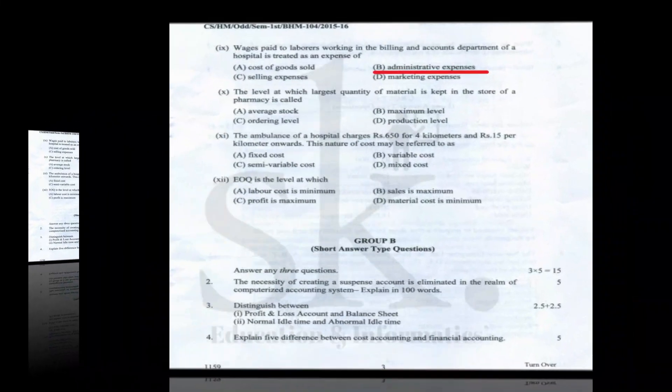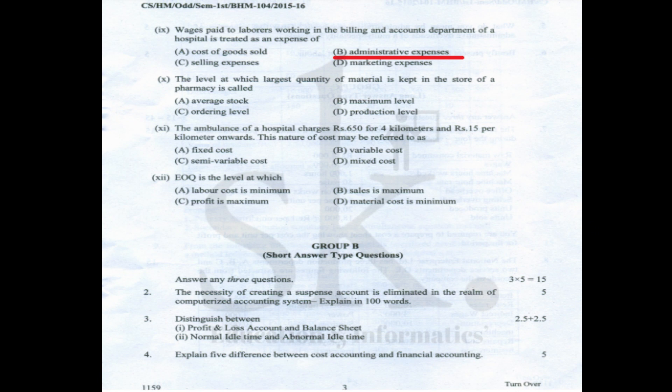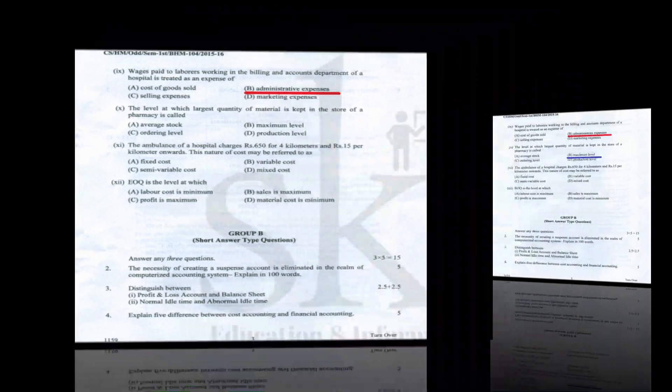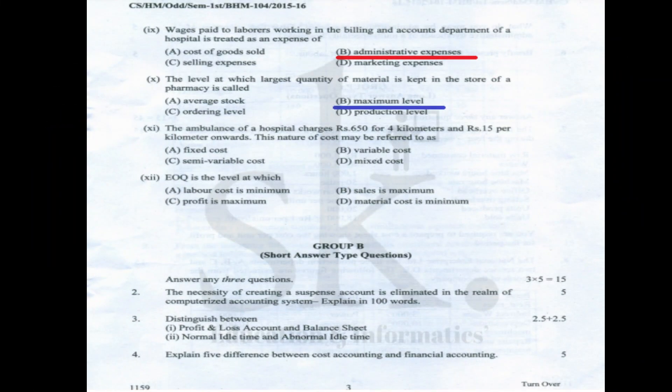Question number nine: wages paid to laborers working in the billing and accounts department should be a part of office and administration expenses. The correct option is B.